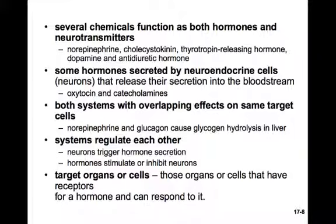Hormones circulate throughout the blood, but why don't they affect every single cell? The answer lies in target organs or cells — those that have receptors for the hormone and can thus respond to it. Norepinephrine, for example, will only have its effect on cells that have receptors for norepinephrine. Otherwise, cells are essentially blind to its passage and have no response to it.